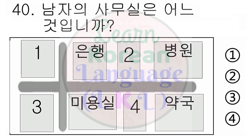25번. 이것은 무엇입니까? 1번 개입니다. 2번 소입니다. 3번 돼지입니다. 4번 연소입니다.